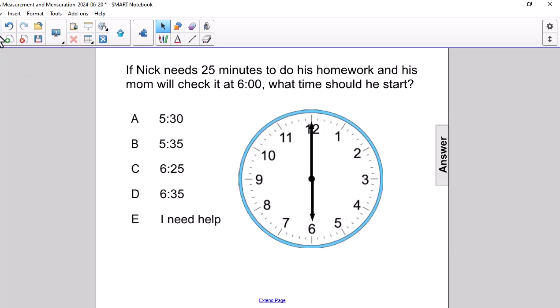Well, there's two ways. One way is I'm going to show you a clock and we're going to start at 6 o'clock. That's what this clock is showing. Now, keep in mind, Nick needs 25 minutes to do his homework. So, he has to start before 6 o'clock. What we're going to do is we're going to count back 25 minutes starting at 6 o'clock.